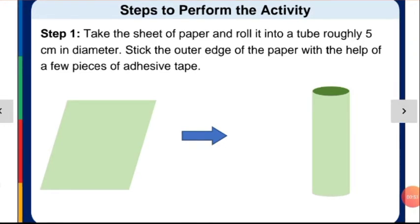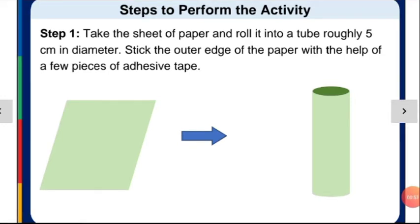Steps to perform this activity: Take the sheet of paper and roll it into a tube roughly 5 centimeters in diameter, as shown in the picture.